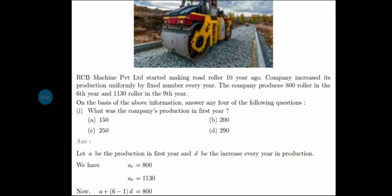RCB Machine Private Limited started making road rollers 10 years ago. Company increased its production uniformly by a fixed number every year. The company produces 800 in the 6th year and 1130 rollers in the 9th year.